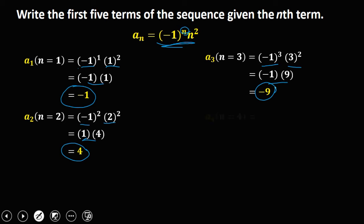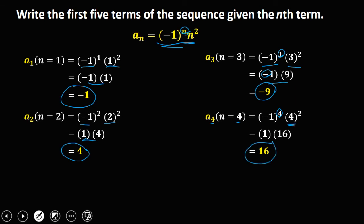The fourth term is a sub 4. So n is now equal to 4. So negative 1 to the power 4, then we have 4 squared. Take note that if the exponent of negative 1 is an odd number, then the answer is negative. But if the exponent is an even number, then the answer is positive. So negative 1 to the power 4 is positive 1, and 4 squared is 16. 1 times 16 is positive 16. This is the fourth term.